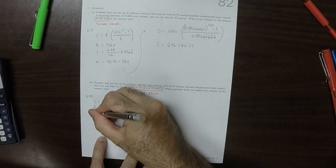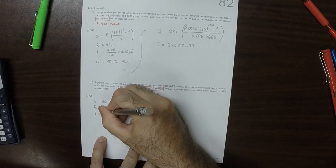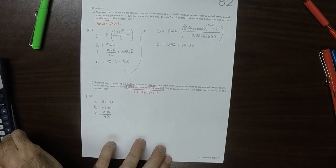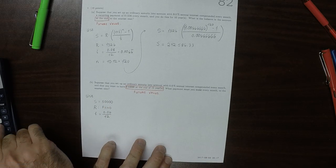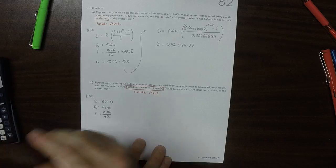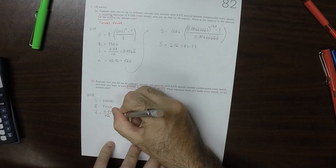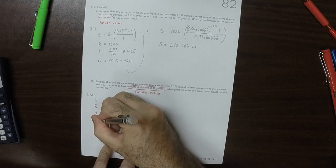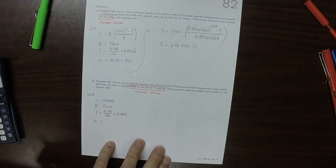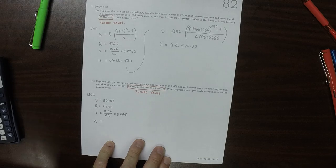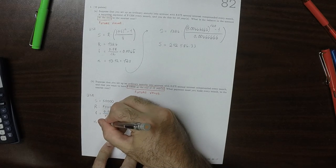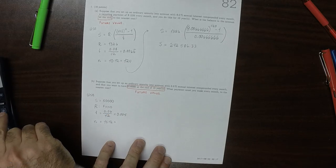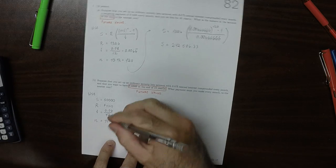I is equal to 0.06 over 12, which is 0.005. And then N, because it says every month, that would be 15 years times 12 months per year, which is 180.